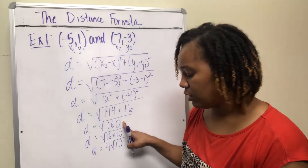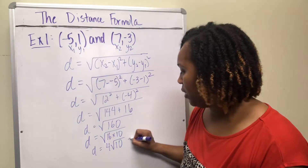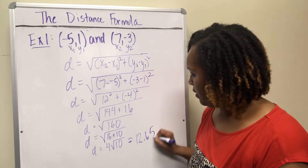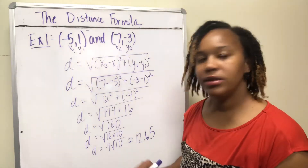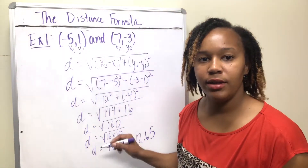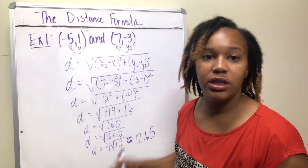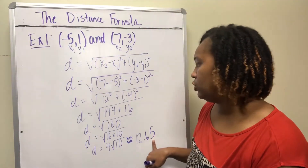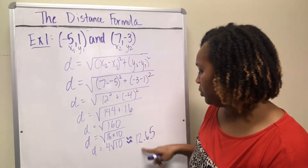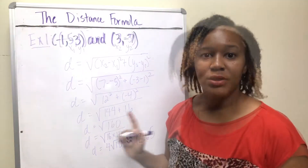If your homework asks for an approximation, plug 4√10 or √160 into your calculator and you get approximately 12.65. This is rounded to the hundredths place. So the distance between those two points is approximately 12.65 units.